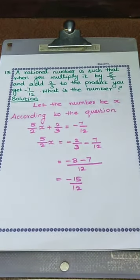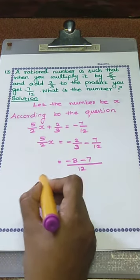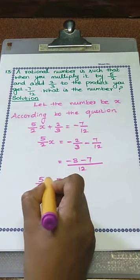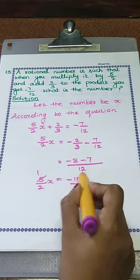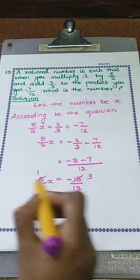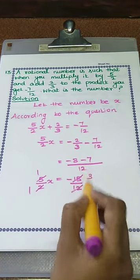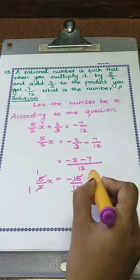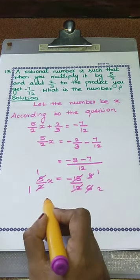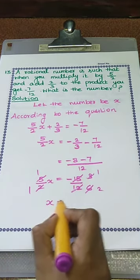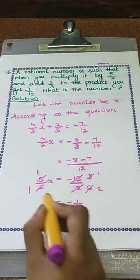Our LHS value is 5 by 2 x equals minus 15 by 12. We now cancel the values: 5 and 15 cancel (5 ones, 5 threes), and 2 and 12 cancel (2 ones, 2 sixes). Then cancel further: 3 ones and 3 twos. So the x value is equal to minus 1 by 2.